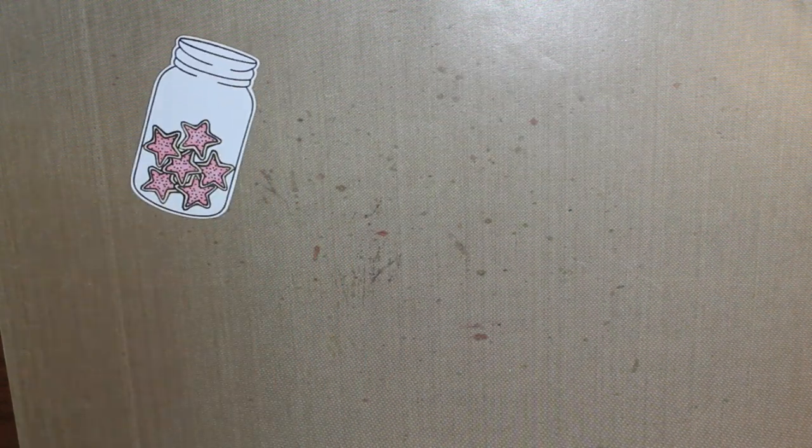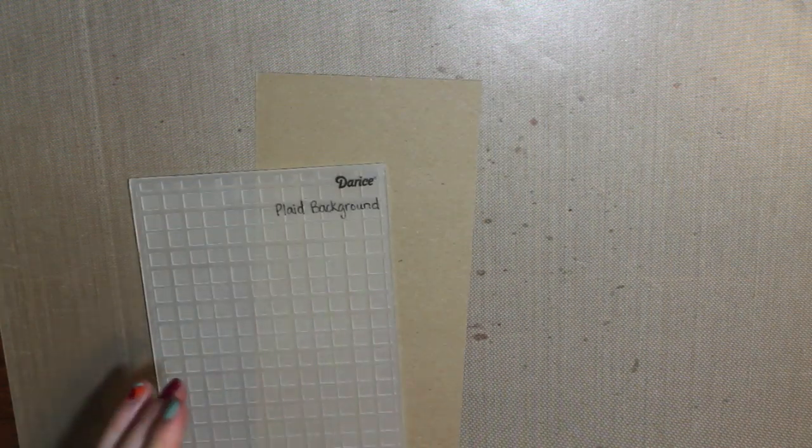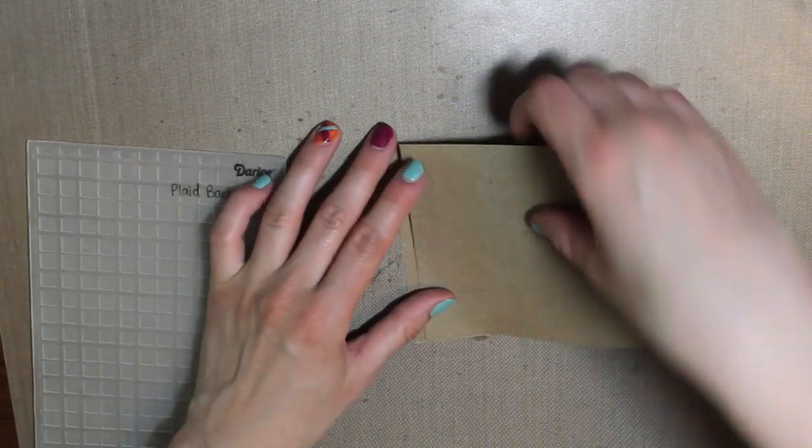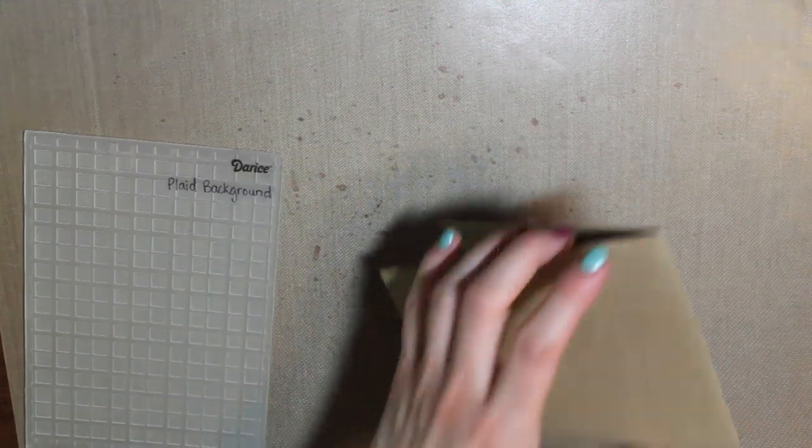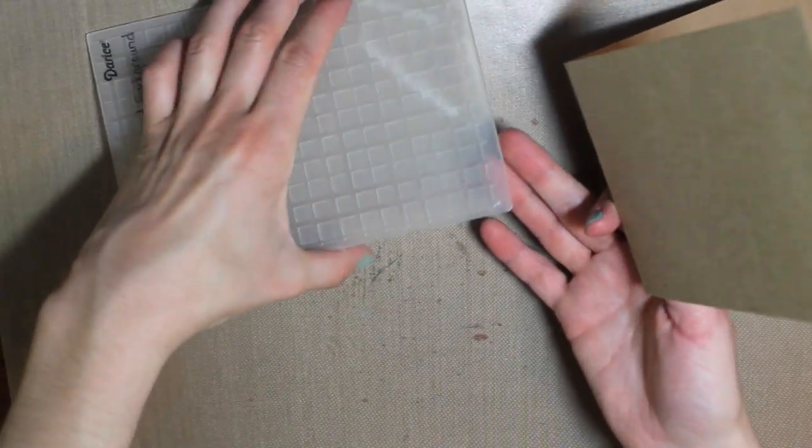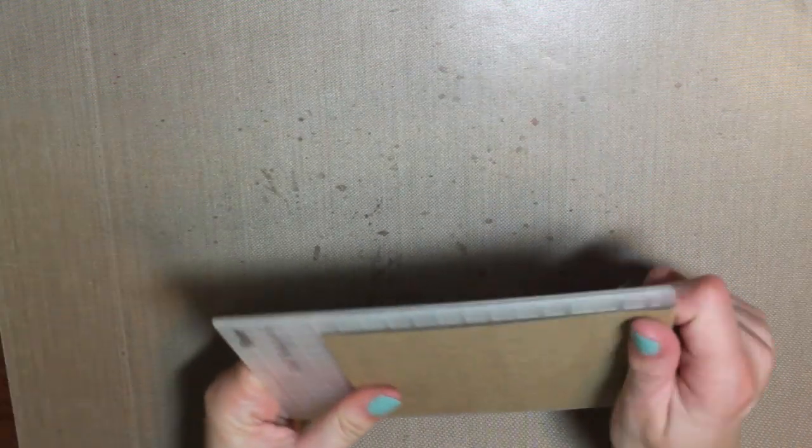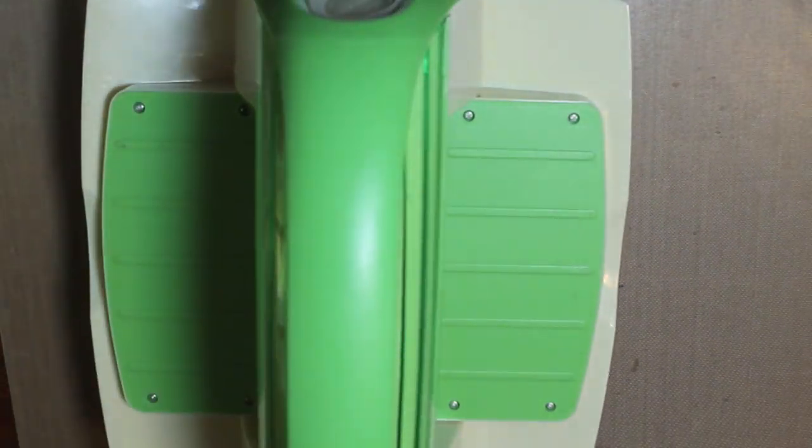So now that my jar is finished, it's time to work on my card base. I'm going to use a piece of craft cardstock. This is going to be just an A2 size card base. And I'm going to emboss the front part of it with the plaid background embossing folder from Darice. And I'm just going to run that right through my cuddle bug.